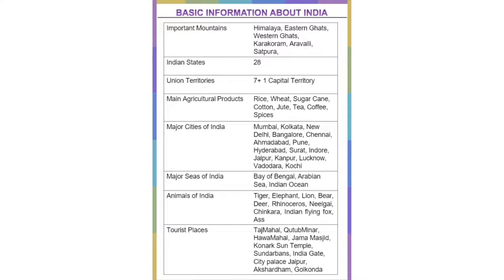Important mountains are Himalaya, Eastern Ghats, Western Ghats, Karakoram, Aravali, and Satpura. There are a total of 28 Indian states with 7 union territories, and now there are a total of 8 union territories.